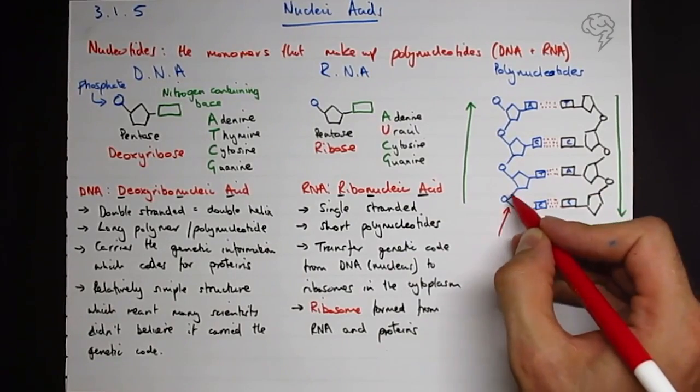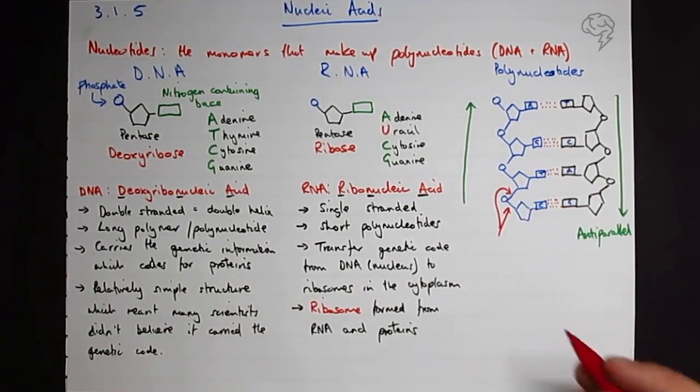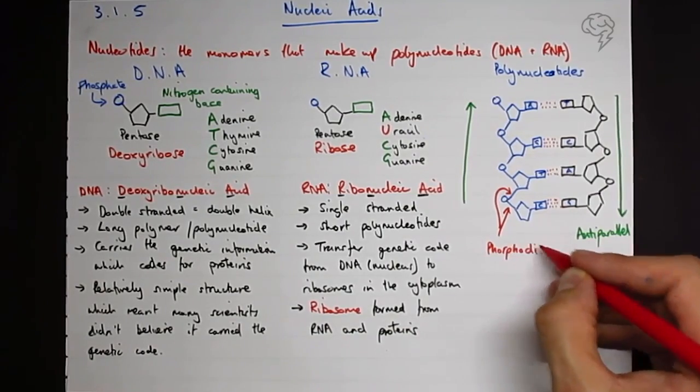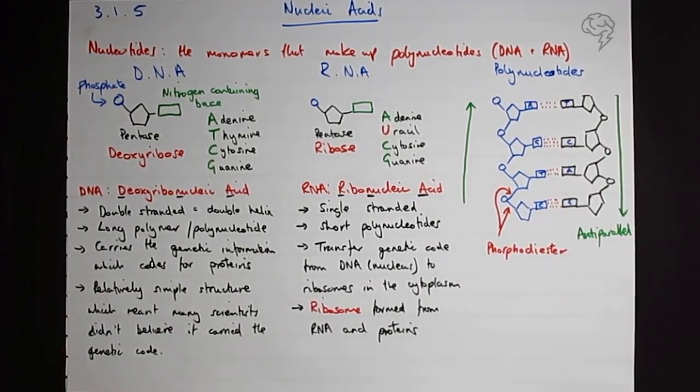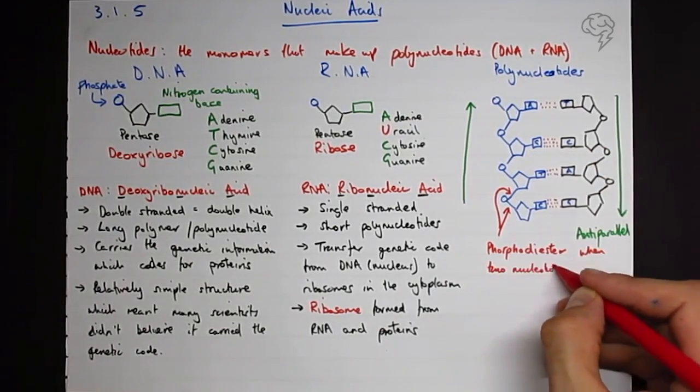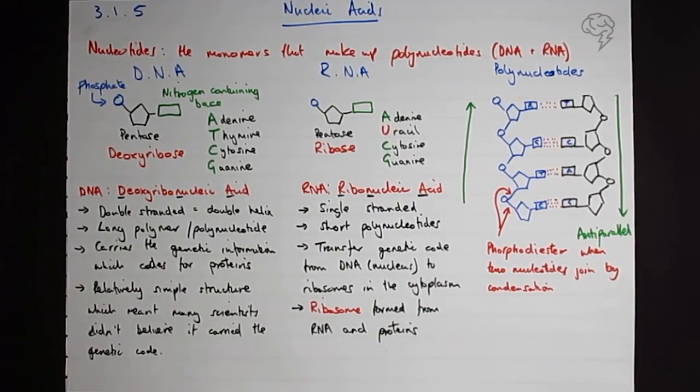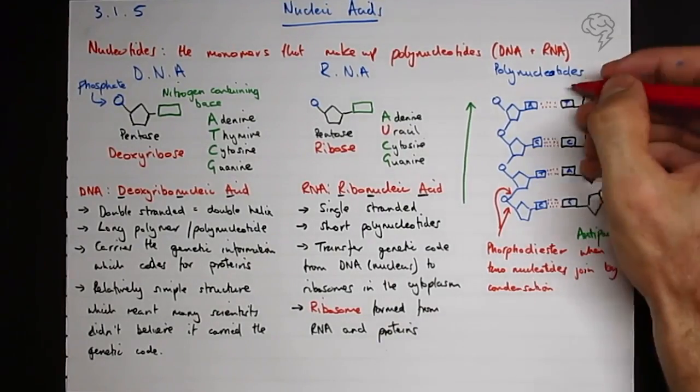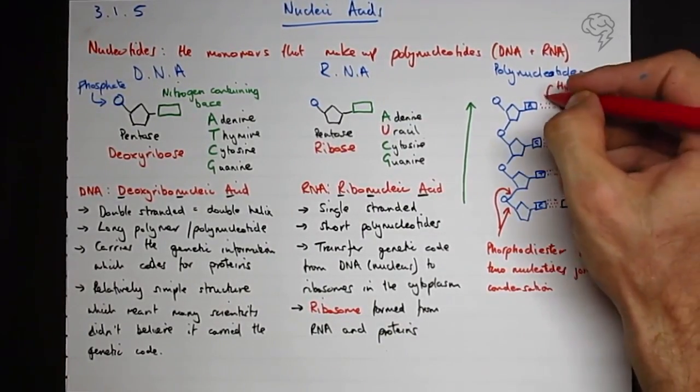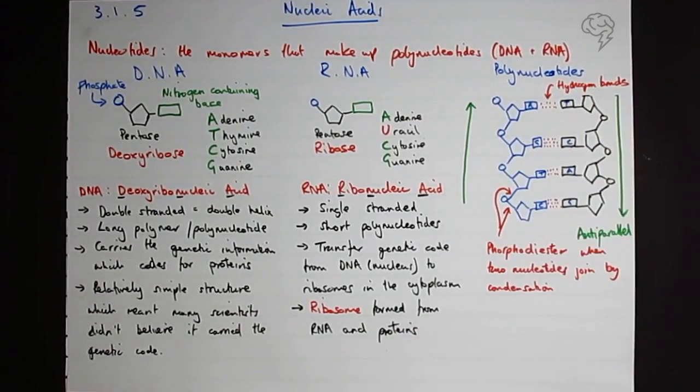What have we got going on here? Well, we've got this bond. This is a phosphate, it's actually called a phosphodiester. You'll remember ester bonds from fats and lipids. It's a phosphodiester, so it's a diester bond - two bonds because you've got one on each side - and it's phospho because there's a phosphate in there. So this is when two nucleotides join by condensation, it's a phosphodiester bond.